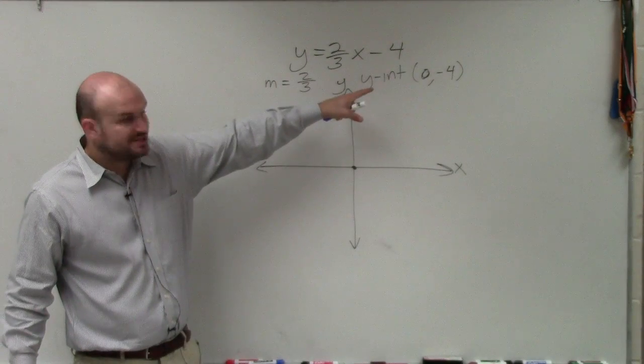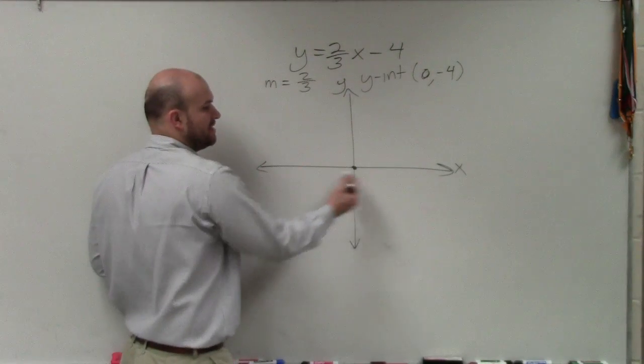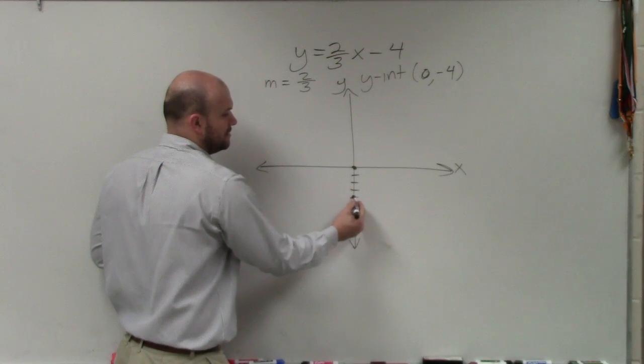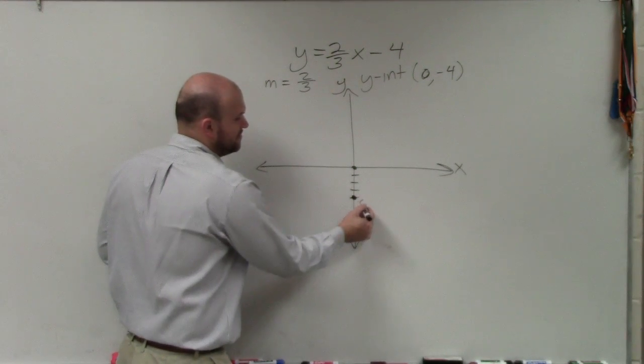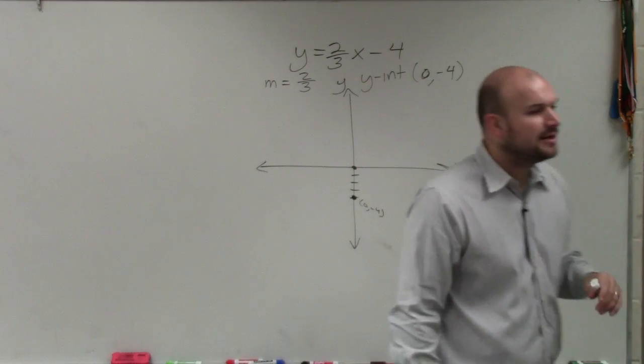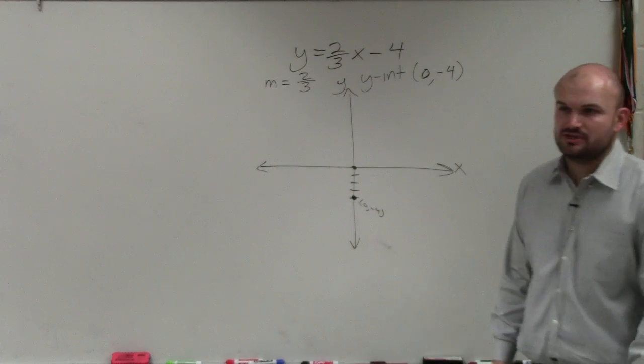So if I was going to plot the point 0, negative 4, I'm not going left or right at all. But I'm going to go down four units and then make a nice big dot. That's the point 0 comma negative 4. You don't need to write in what this y-intercept is, but I think it's kind of helpful just to remind yourself.